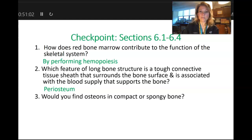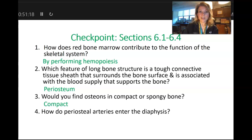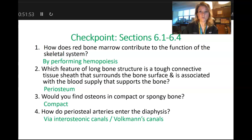Next question: where would you find osteons — in compact bone or in spongy bone? Hopefully you said compact bone, because you will not find osteons in spongy bone. And our last question: how do periosteal arteries enter the diaphysis — what canal do arteries and veins use to enter the bony matrix? This canal runs perpendicular to the medullary cavity. You could give one of two answers: the interosteonic canal or Volkman's canal.